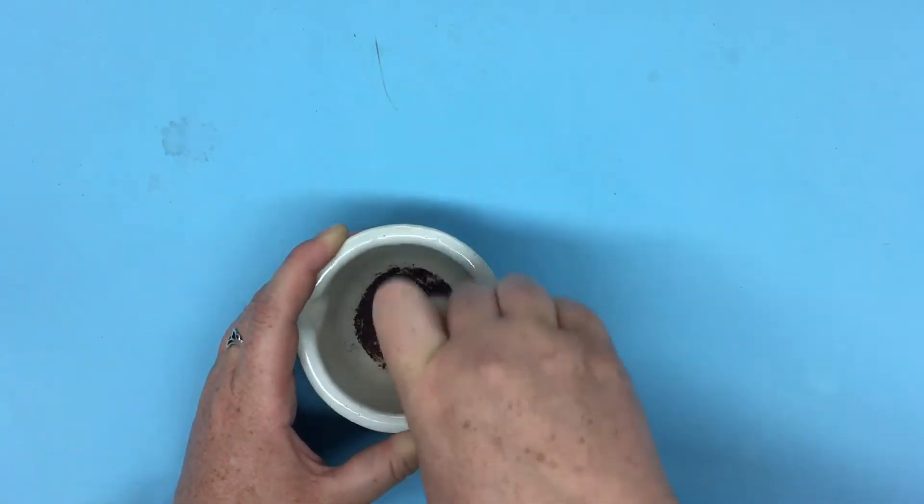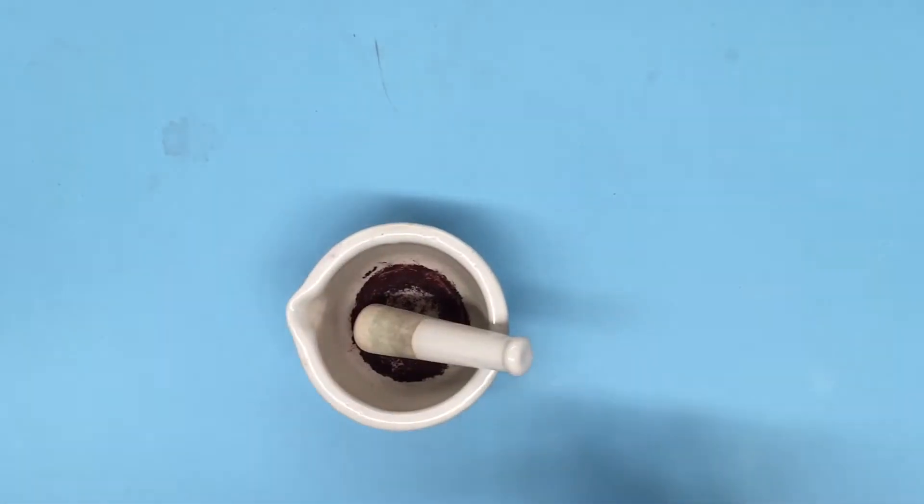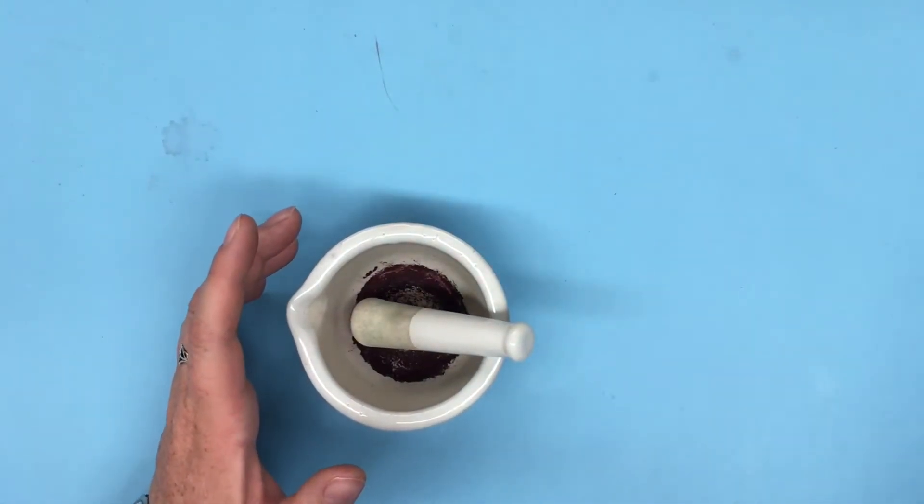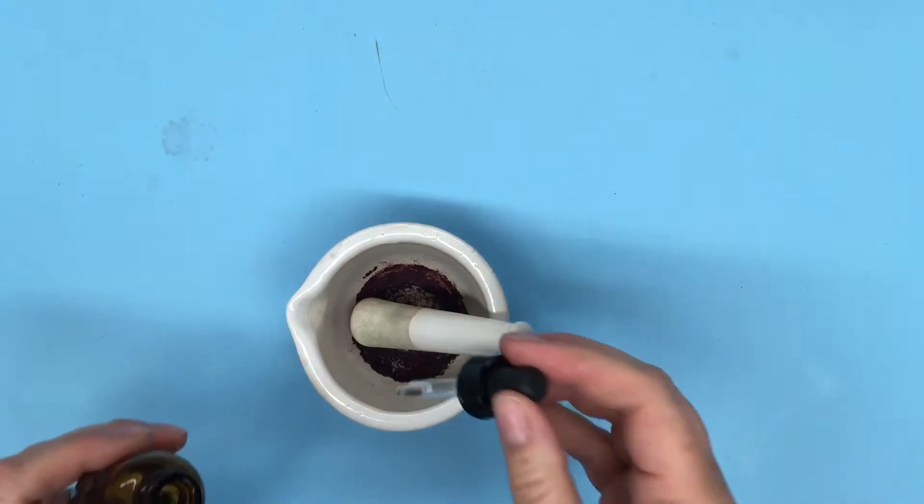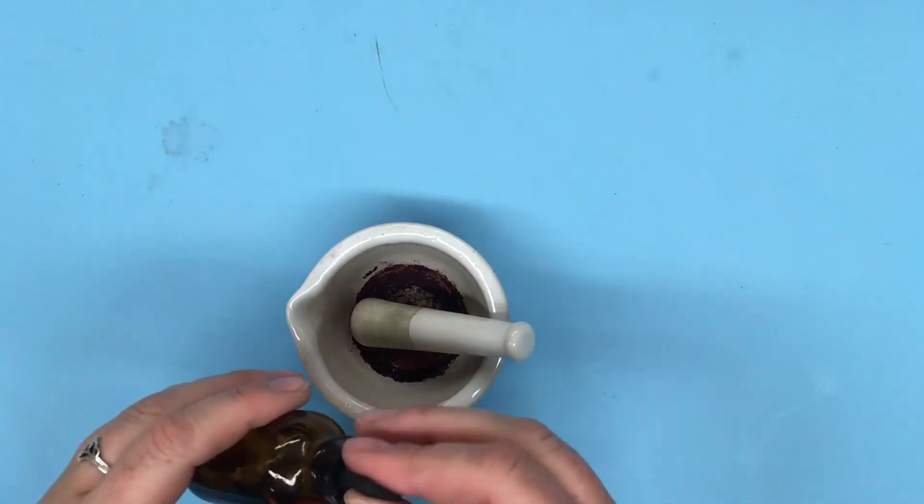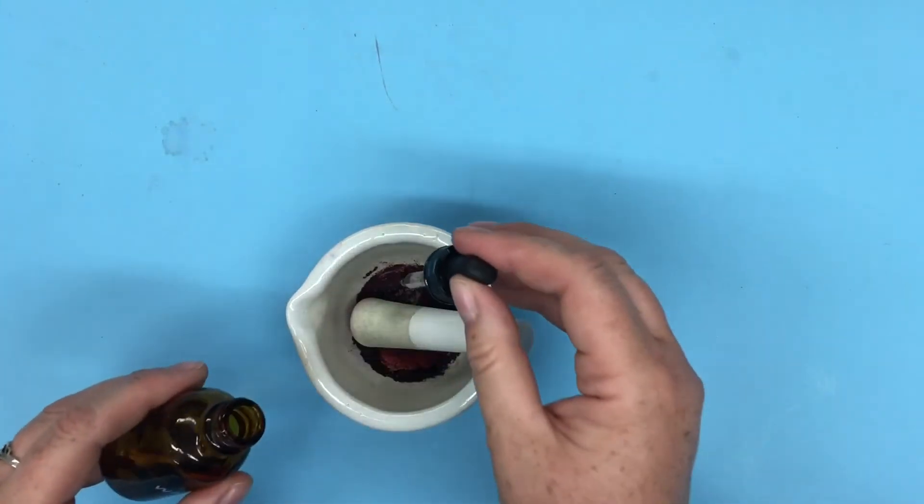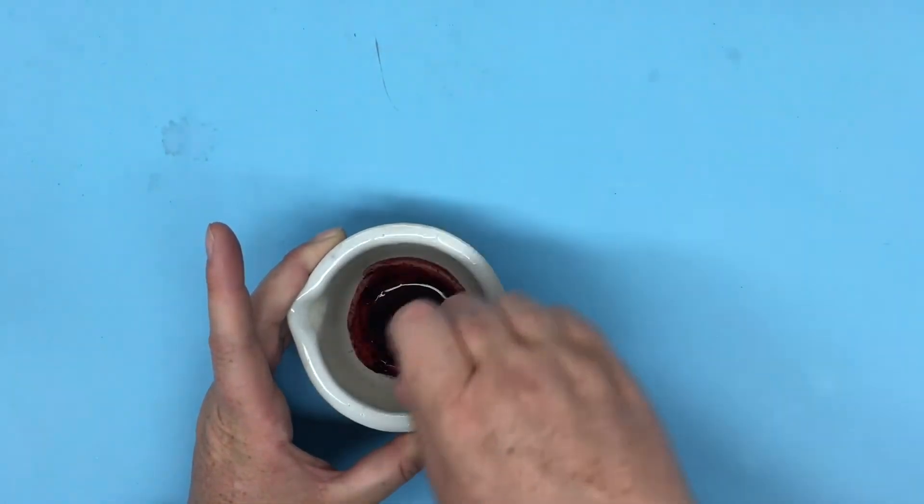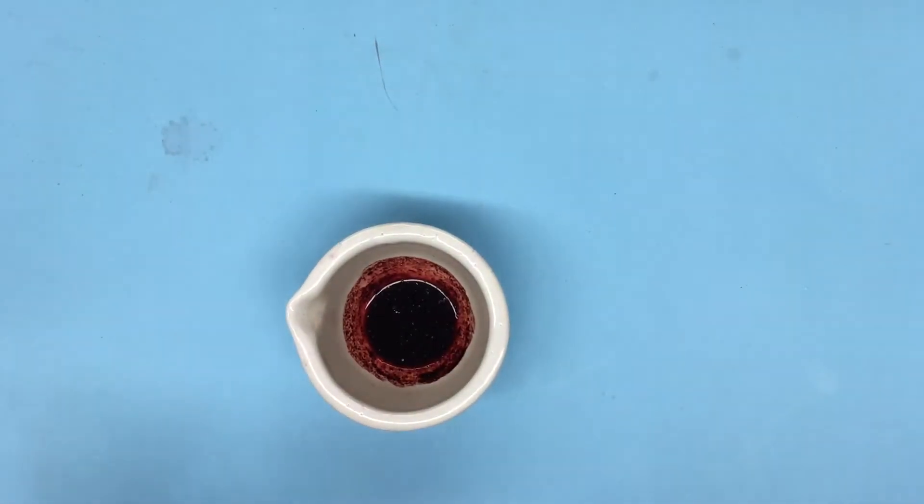So we're going to grind some of those up right here. Carminic acid is pH sensitive and will change color with the addition of an acid or a base. So to start, I'm going to add a little bit of distilled water into our ground up cochineal insects. That's the common name for these bugs. Only the females are used in producing dye. There we go. We can see that it produces a dark red color.